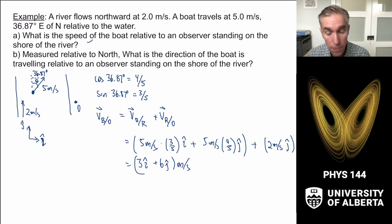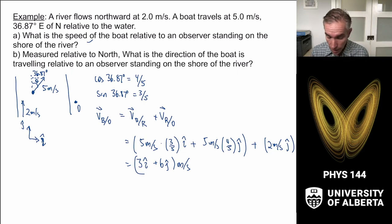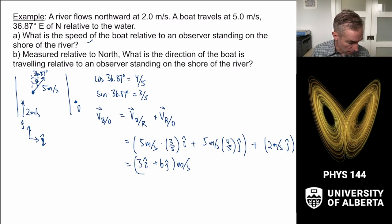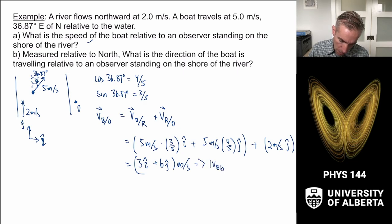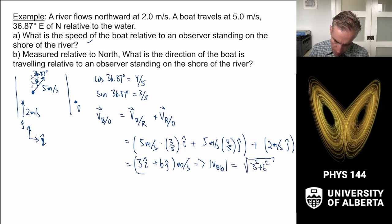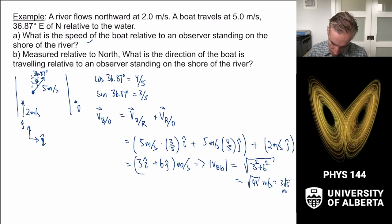This gives us the velocity vector. The speed of the boat relative to the observer is the magnitude: the square root of 3 squared plus 6 squared, which is the square root of 9 plus 36, or root 45 meters per second. Simplifying, that's 3 root 5 meters per second.